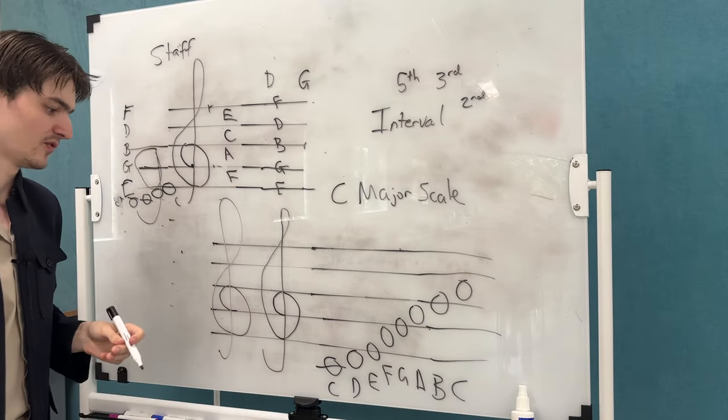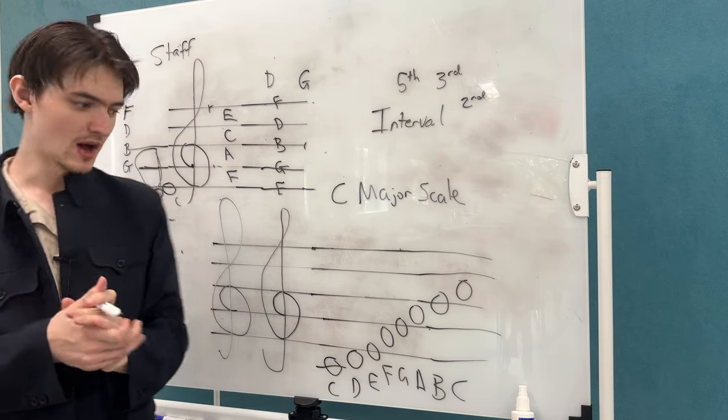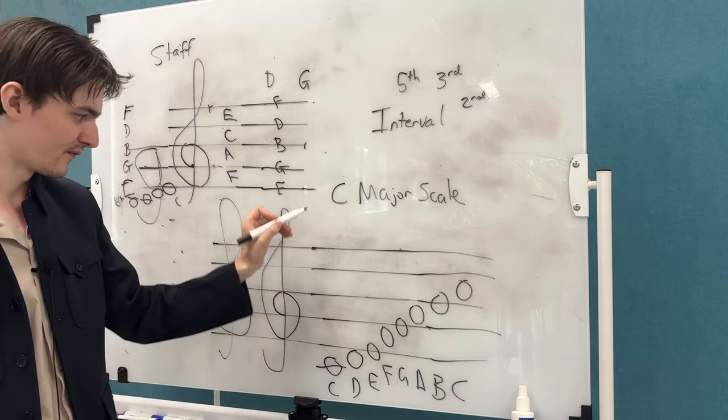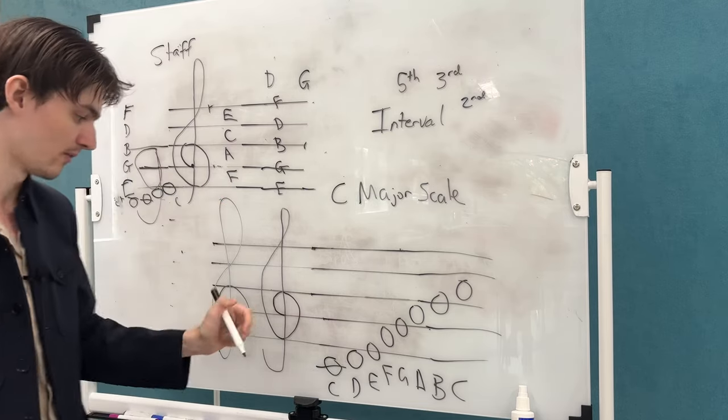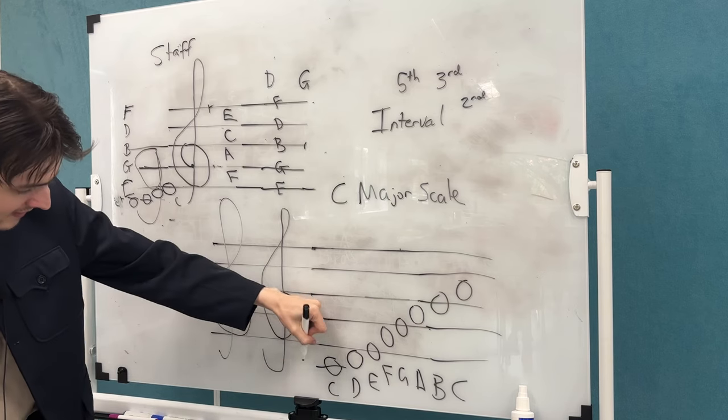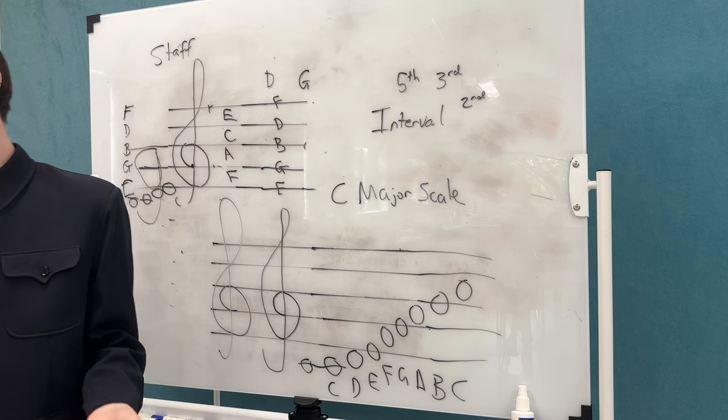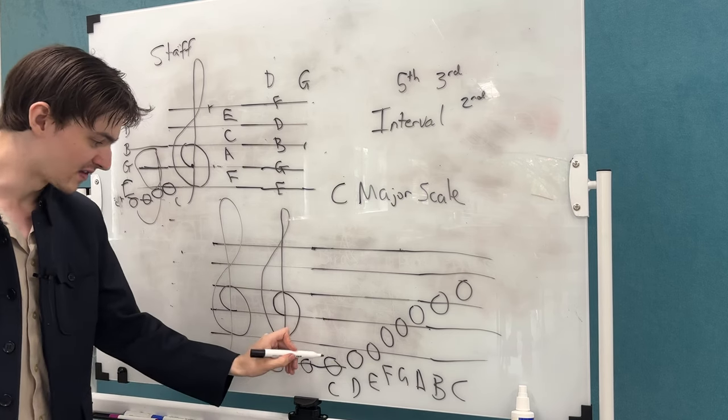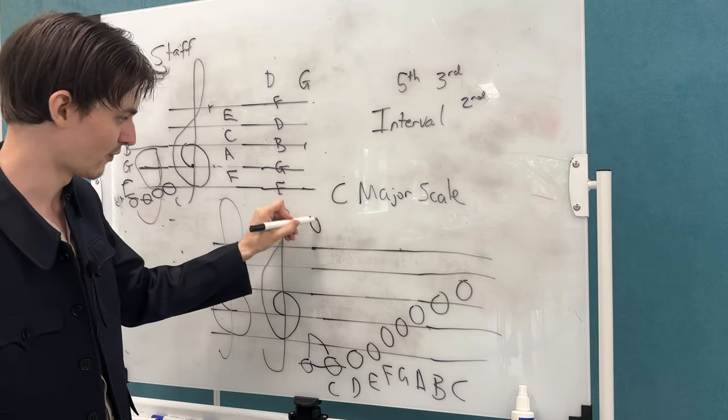When we count intervals, we actually count them, not the way that we count maths, but we start by calling the first note that we're going to start counting from as one rather than zero. We call that one one. So if I was actually counting the interval between C and C, you would think that's zero.